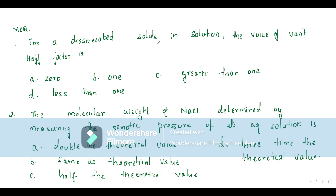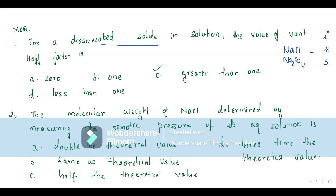For a dissociated solute in solution, the value of the Van't Hoff factor: for a dissociated solute like NaCl, one NaCl gives you two particles — Van't Hoff factor is 2. For K₂SO₄, Van't Hoff factor is 3. So easily you can figure out that for a dissociated solute in solution, the value of the Van't Hoff factor is greater than 1.